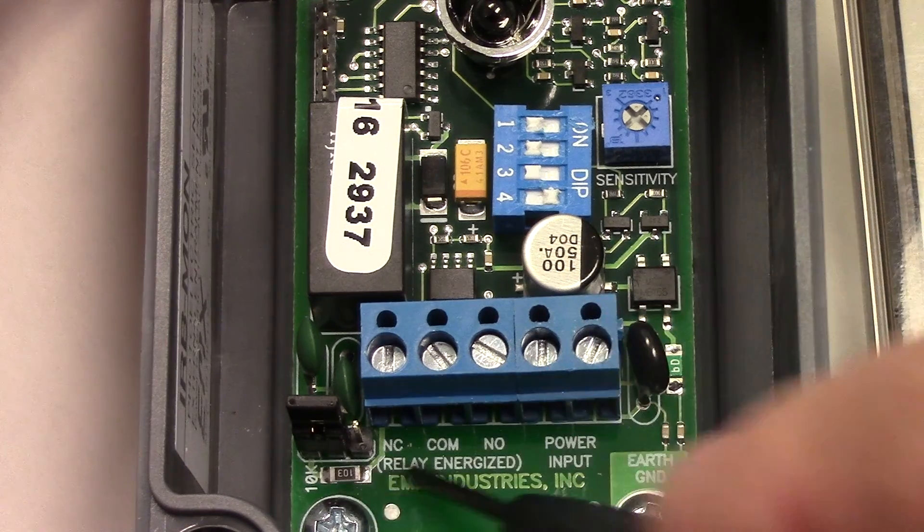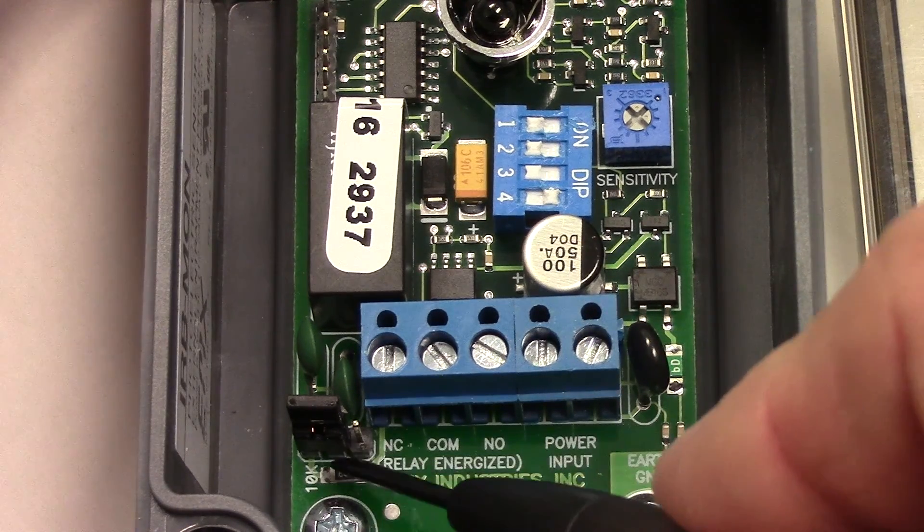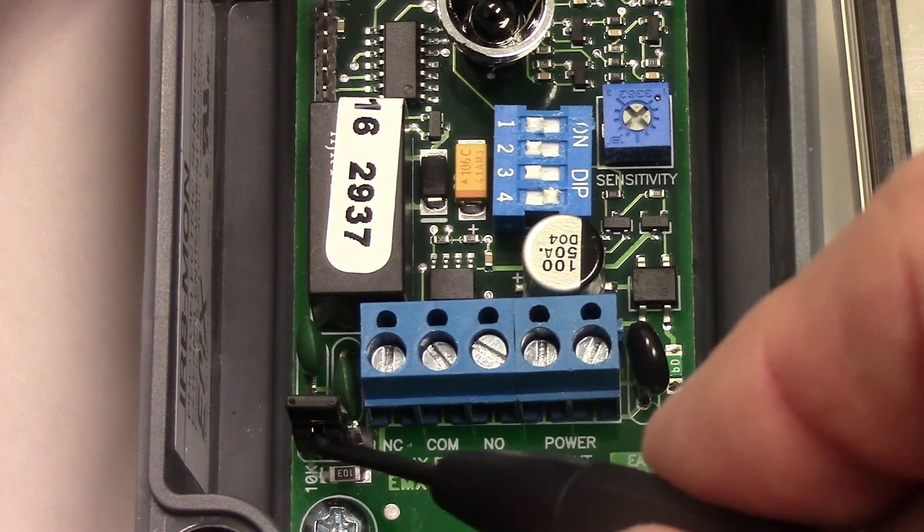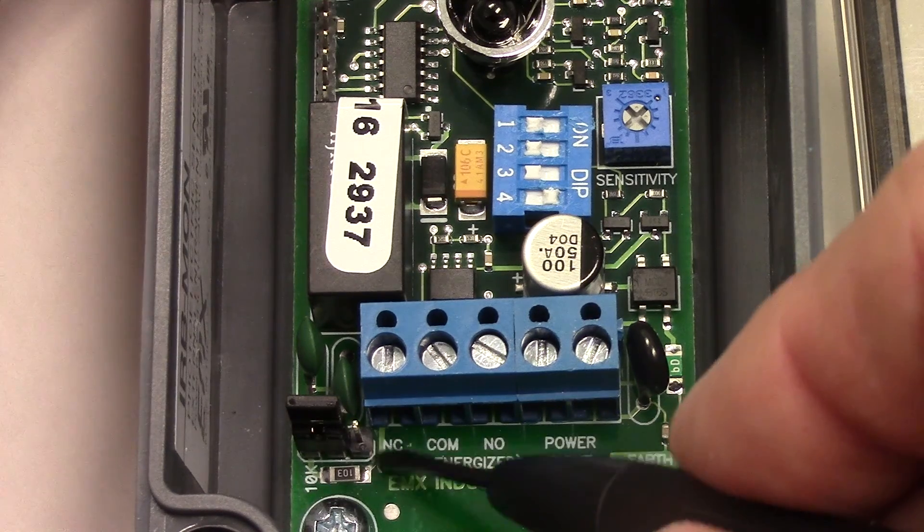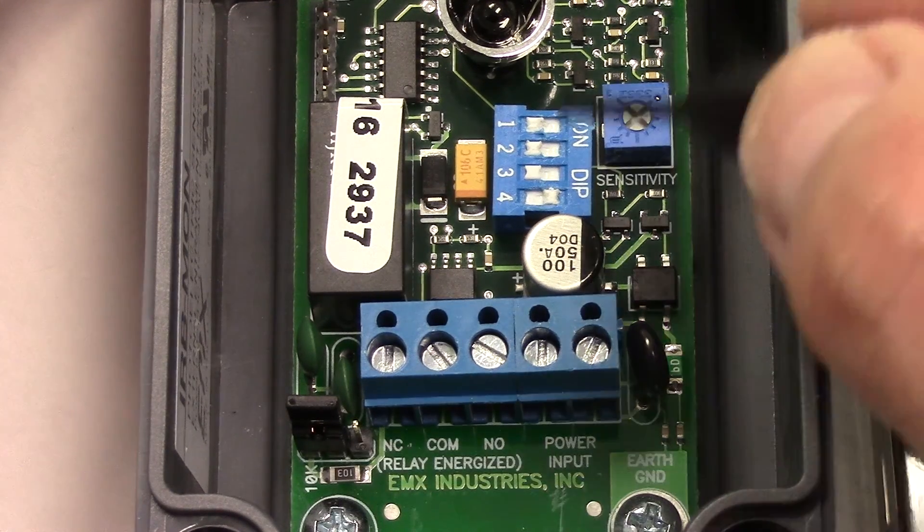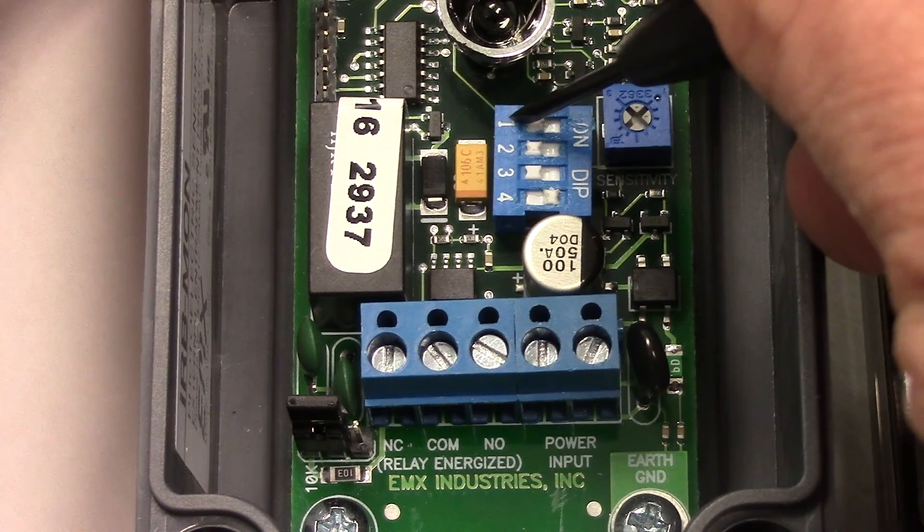For the resistive termination we have a jumper that allows the 10k resistor to be placed into the circuit or removed from the circuit. That's the relay option.